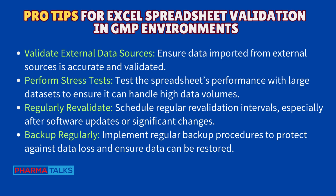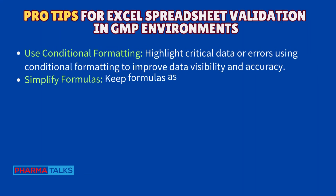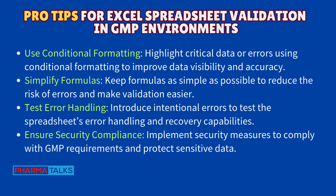Backup regularly — implement regular backup procedures to protect against data loss and ensure data can be restored. Use conditional formatting — highlight critical data or errors using conditional formatting to improve data visibility and accuracy. Simplify formulas — keep formulas as simple as possible to reduce the risk of errors and make validation easier. Test error handling — introduce intentional errors to test the spreadsheet's error handling and recovery capabilities. Ensure security compliance — implement security measures to comply with GMP requirements and protect sensitive data.